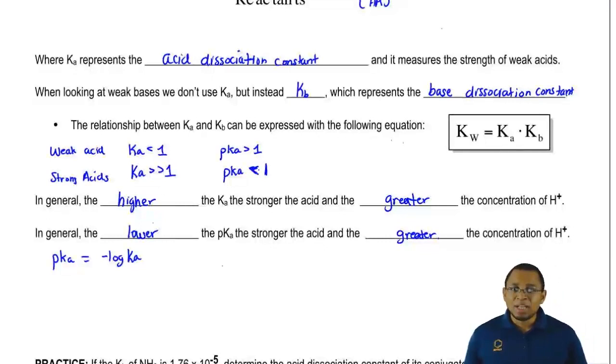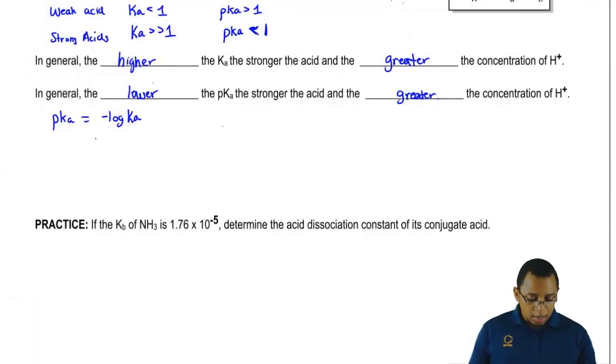And remember, we should be able to establish a relationship between Ka and pKa in the same way we've been able to establish a relationship between H positive and pH. Because here, we can just simply say Ka equals 10 to the negative pKa.